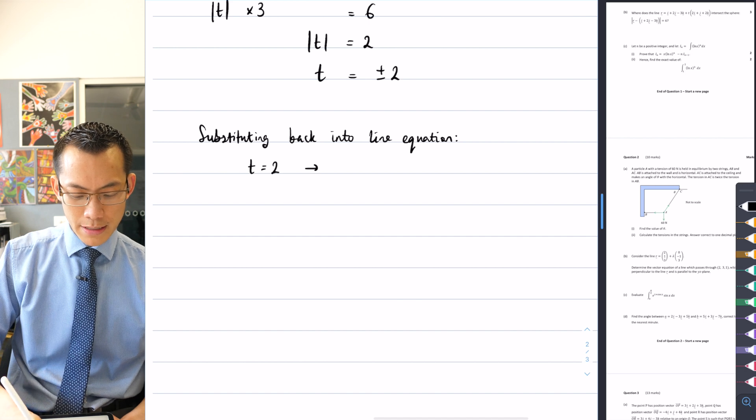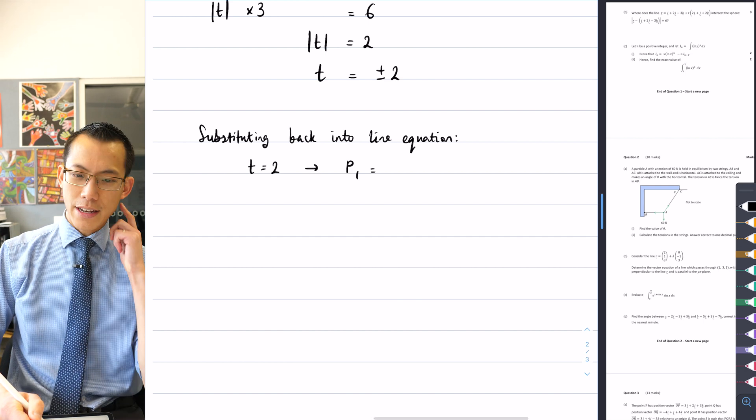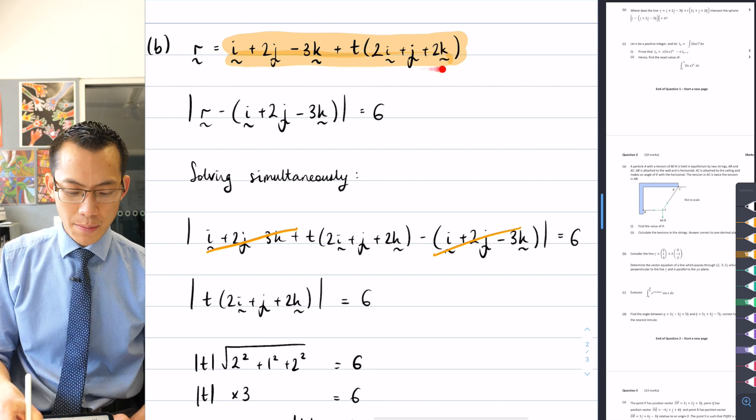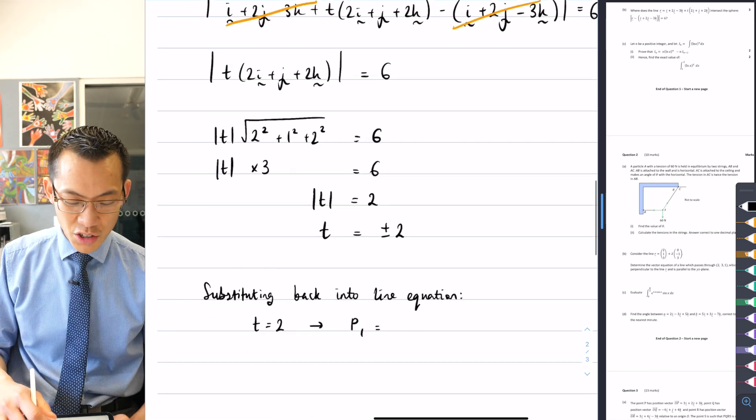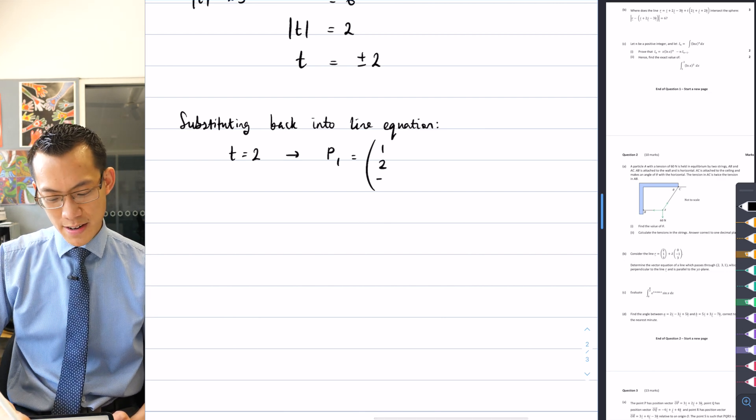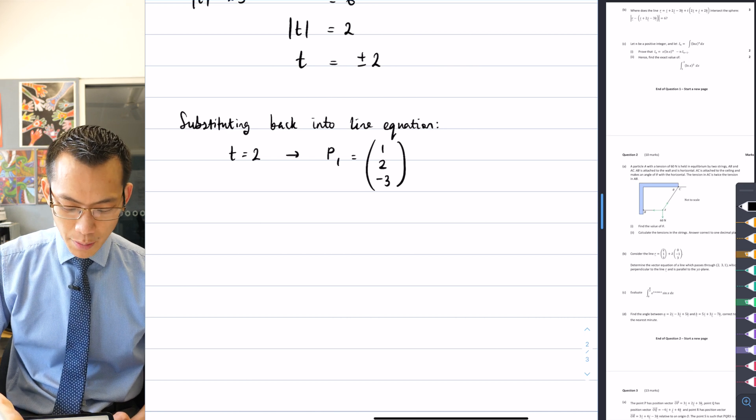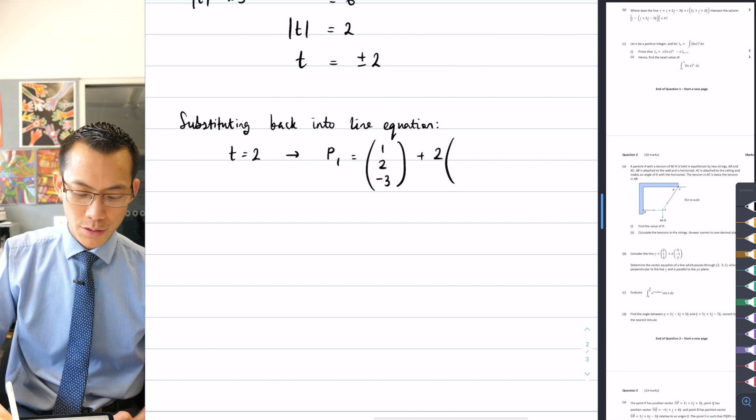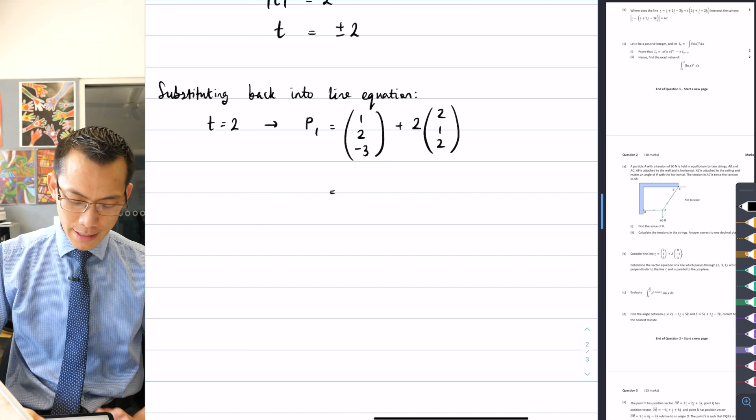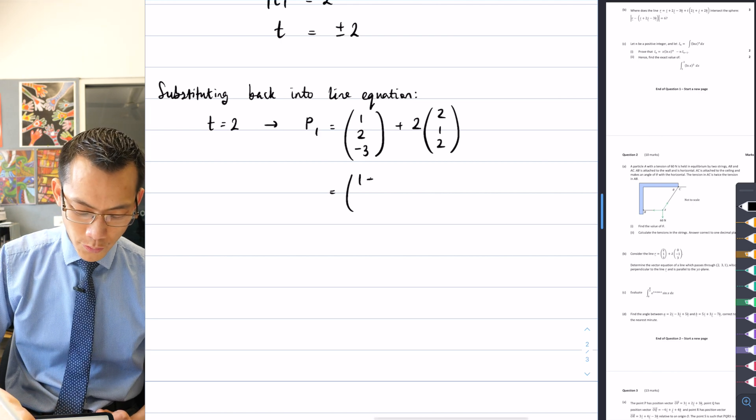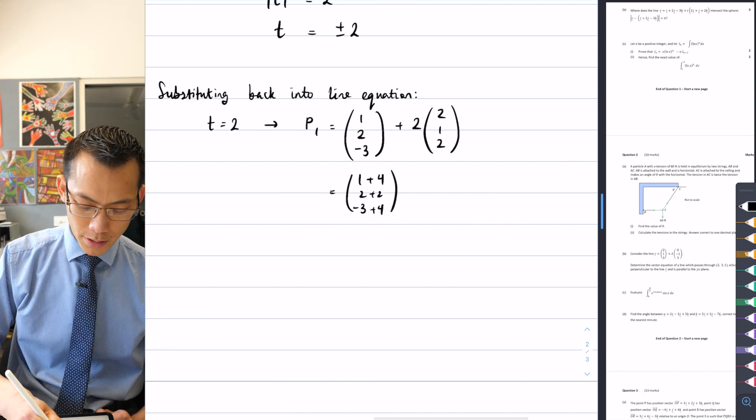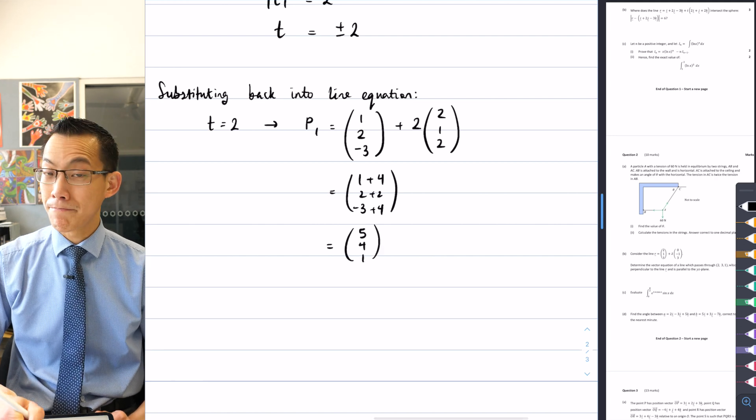So t equals 2 is going to give me a particular point I'm going to call point 1. I'm just going to write this in column form: 1, 2, negative 3, and then I'm going to add two lots of 2, 1, 2. So that's 1 plus 4 on the top, 2 plus 2 in the middle, and negative 3 plus 4 on the bottom, giving me 5, 4, and 1.